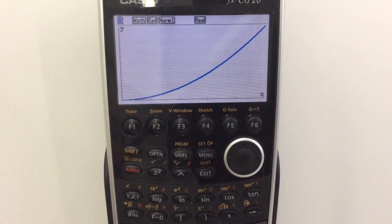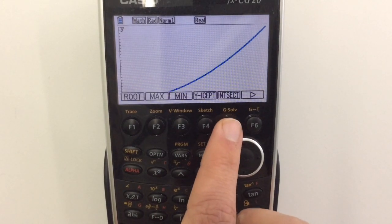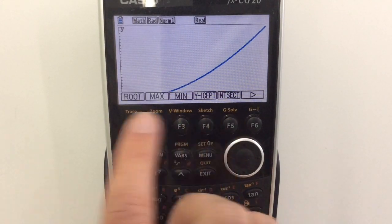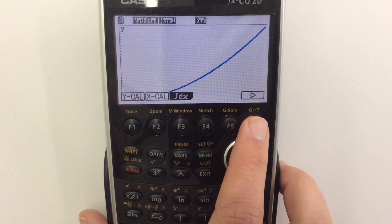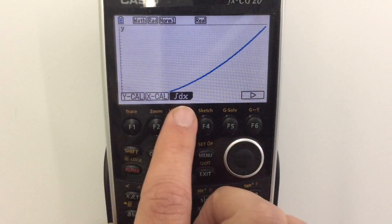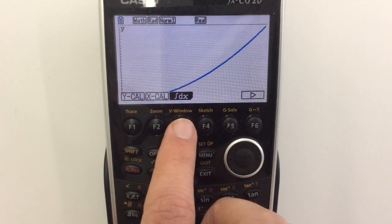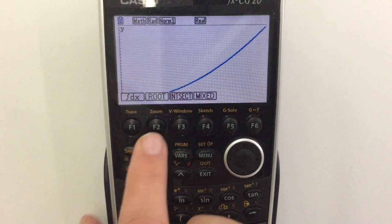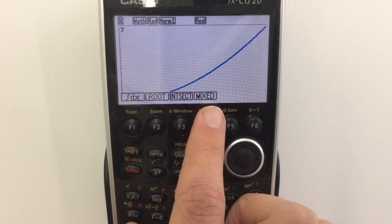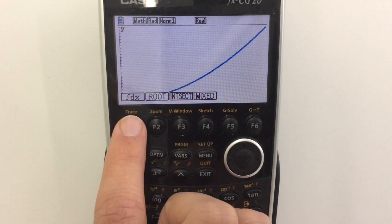Now if I wanted to find the area underneath it I press graph solve just above this F5 button. We've got a range of options here but we want the next one. Let's go into this part here. We can find the integral under a curve. Let's click integrate.